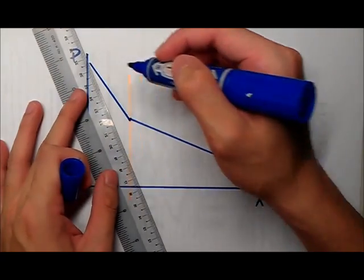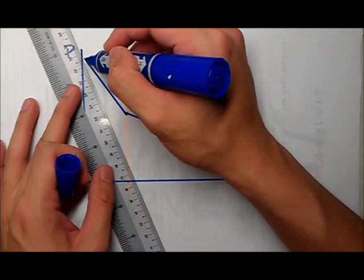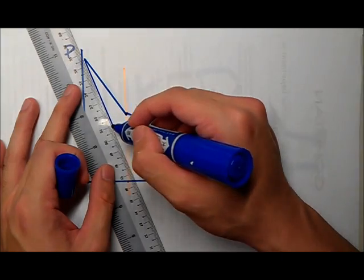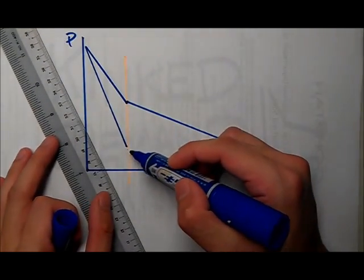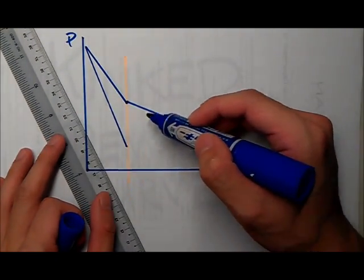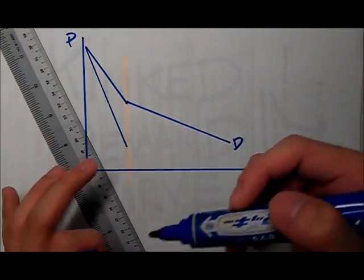From here, we know that the marginal revenue curve is two times steeper than the demand curve. If you're not sure, go back to the monopolies graph video to check it out. We're going to stop here. And now, we're going to be confused on how this guy is going to look like.